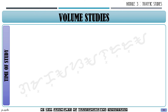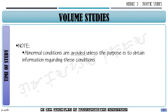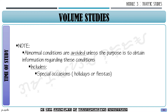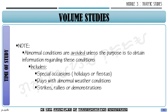For the time of study, please take note: abnormal conditions of a road section should always be avoided unless the purpose of counting is to gather data defining that specific condition. Abnormal conditions include special events such as holidays or fiestas, days with abnormal weather conditions like typhoons, and events like strikes, rallies, and demonstrations.